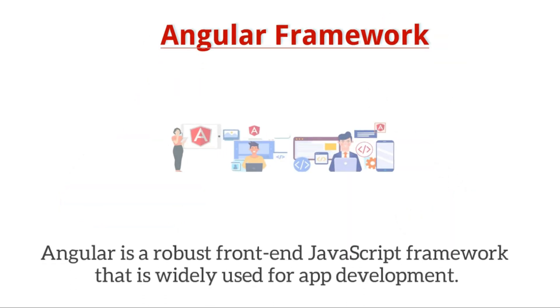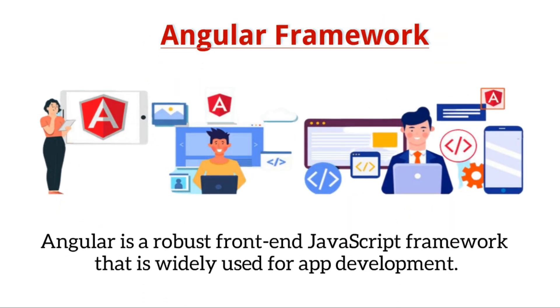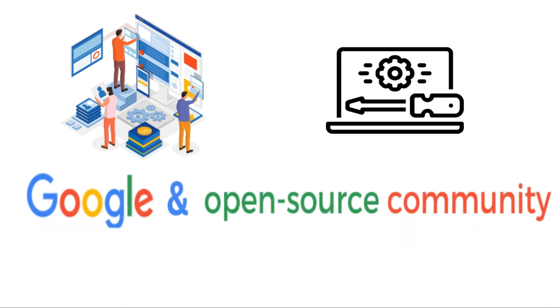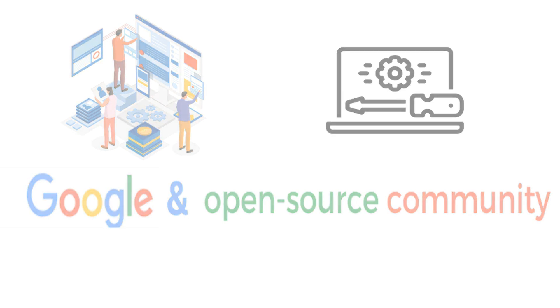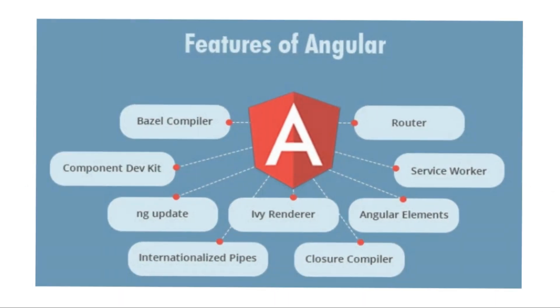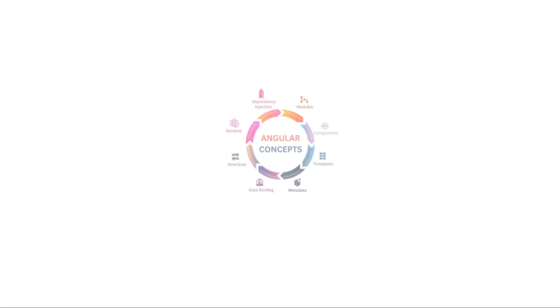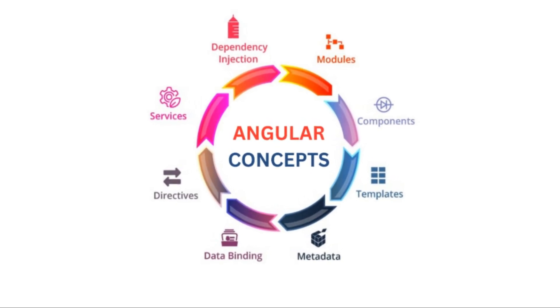Angular is a robust front-end JavaScript framework widely used for app development. The framework is developed and maintained by Google and the open-source community. It has many features like two-way data binding, templating, routing, components, and dependency injection. The most important Angular concepts include modules, components, templates, data binding, directives, services, dependency injection, and metadata.